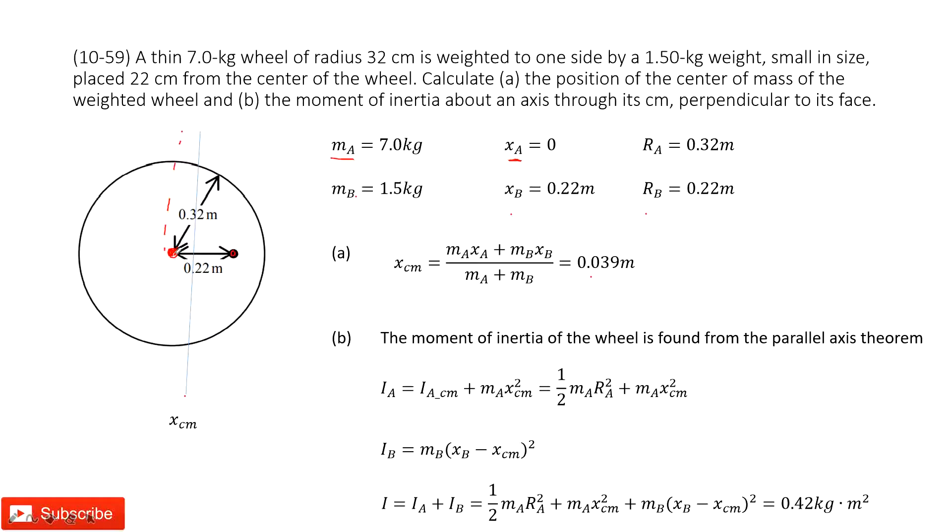We consider the moment of inertia for A, this circle, the wheel. So it must have the moment of itself with the center of mass, and also MA times XCM squared. This is the parallel axis theorem. So we consider parallel axis theorem.